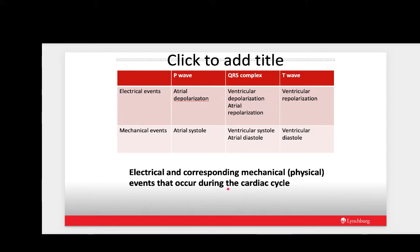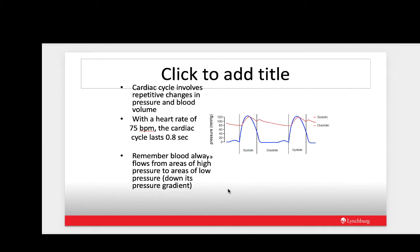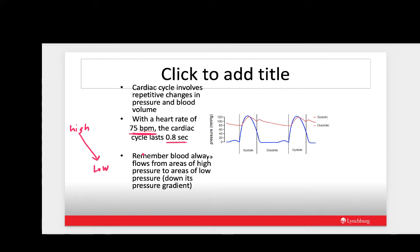Here's a table correlating electrical and mechanical events in the heart to deflections on the ECG. The cardiac cycle involves repetitive changes in pressure and blood volume in the heart. With a heart rate of 75 beats per minute, which is pretty typical, the cardiac cycle lasts about 0.8 seconds. It's important to remember that blood always flows from areas of high pressure to areas of low pressure — both in the heart and throughout the circulatory pathway in the body.